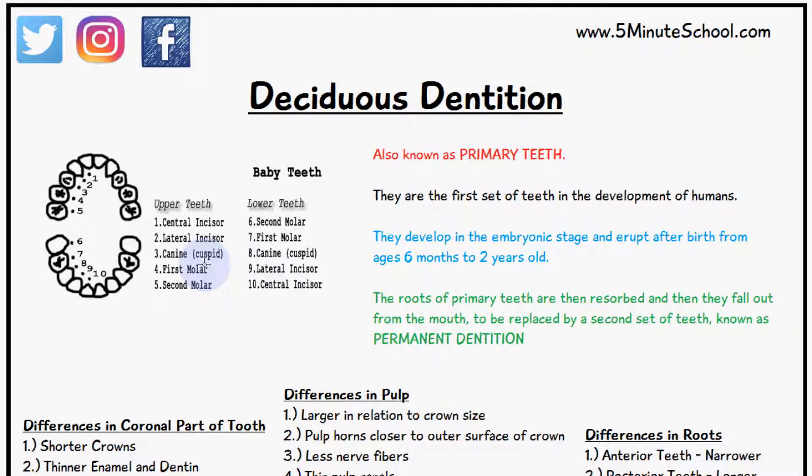Welcome to 5-Minute School. In today's video we're going to be talking about deciduous dentition. They are also known as primary teeth and they are the first set of teeth in the development of humans. They develop in the embryonic stage and they erupt after birth from the ages six months to two years old.